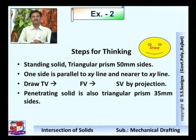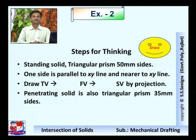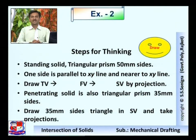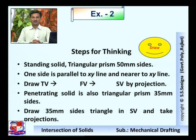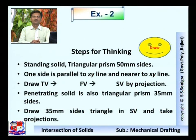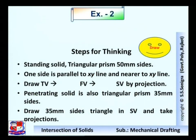The penetrating solid is also a triangular prism of 35 mm sides. Draw a 35 mm triangle in the side view, since it is the penetrating solid and the axes of both solids bisect each other. After drawing the three views of the standing solid, in its side view draw the side view of the 35 mm triangle, then take projections and find the points of intersection.